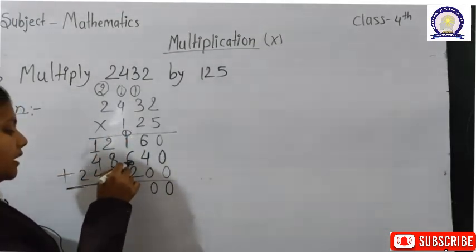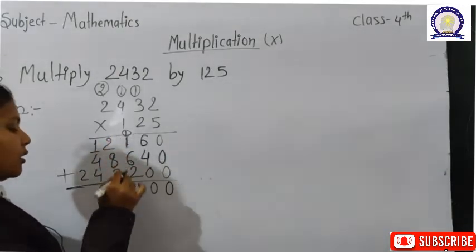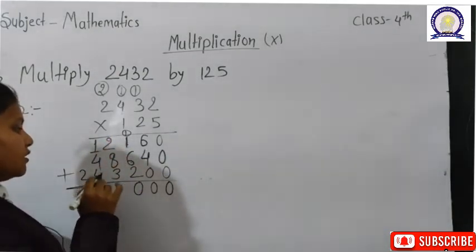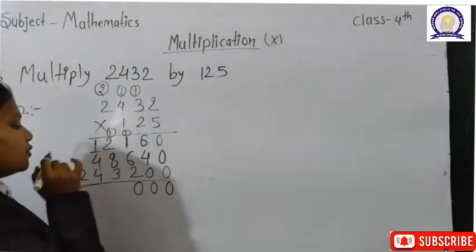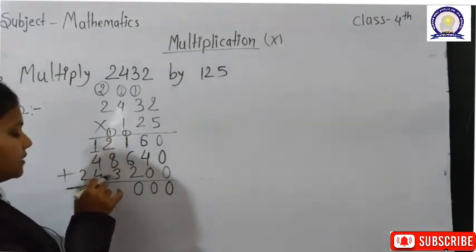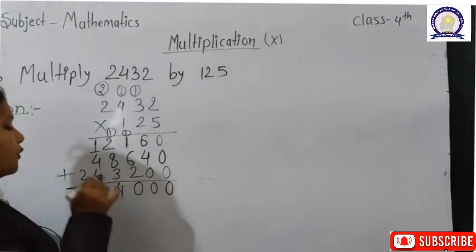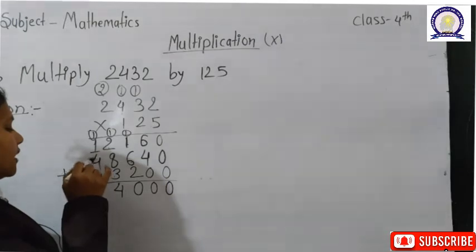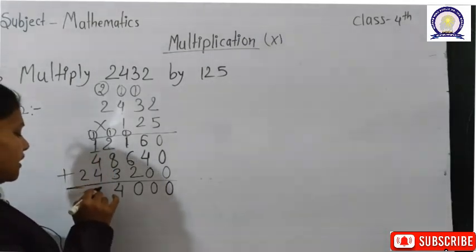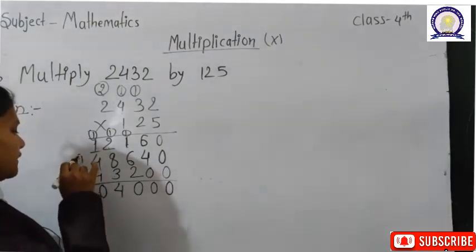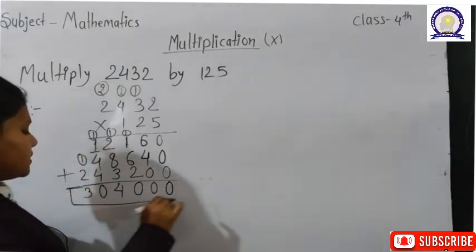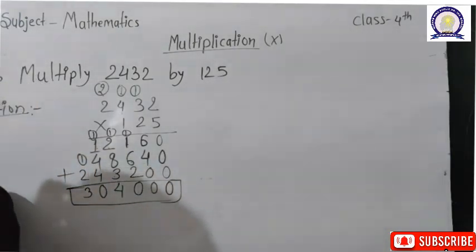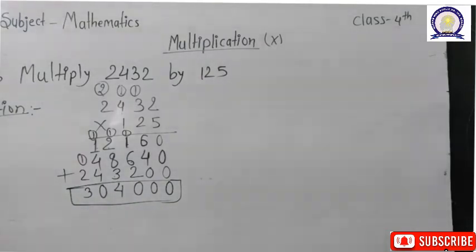Now we start the next digit's multiplication. Since 5's multiplication is done, we place a 0 in its place. Then the 2 times table: 2×1=2, 2×2=4, 2×3=6, 2×4=8, 2×2=4. After 2 and 5 are done, we place two zeros and start the 1 times table: 1×2=2, 1×3=3, 1×4=4, 1×2=2.